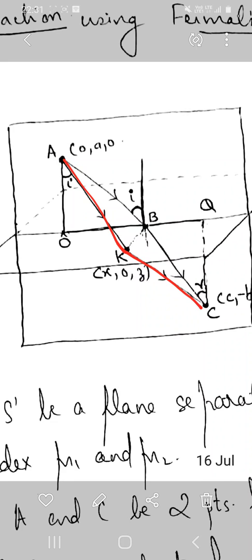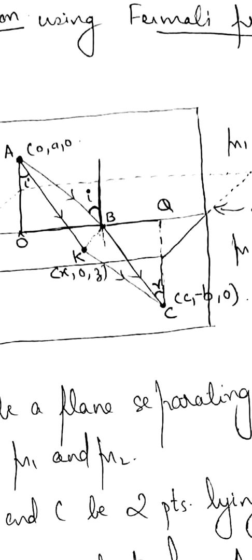As you can see from the figure, OA equals small a, QC equals minus b since it is a distance taken in the negative direction, and OQ equals c where O is the origin.